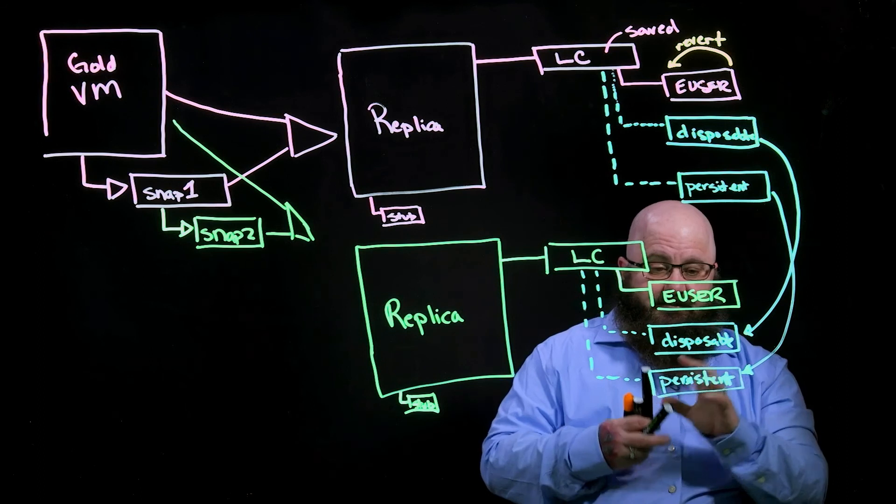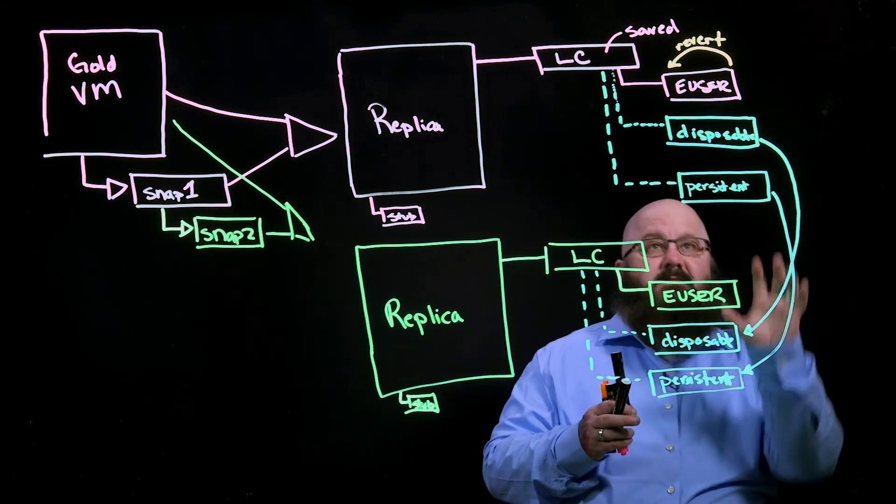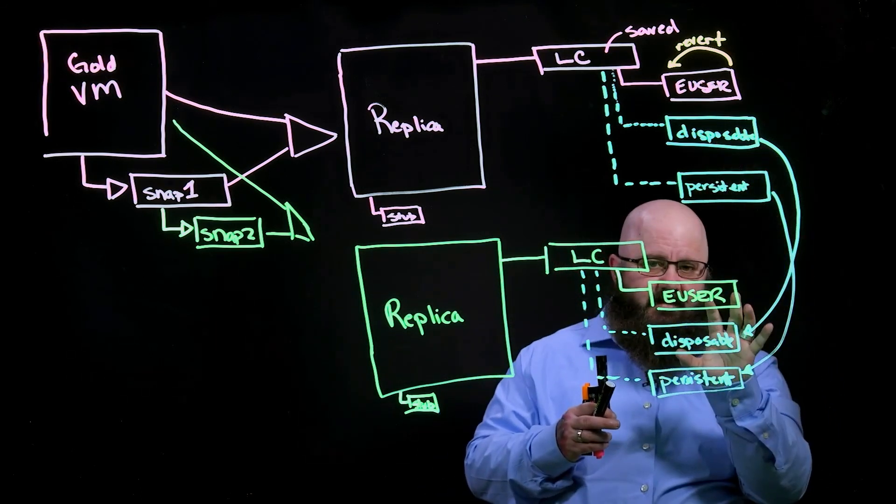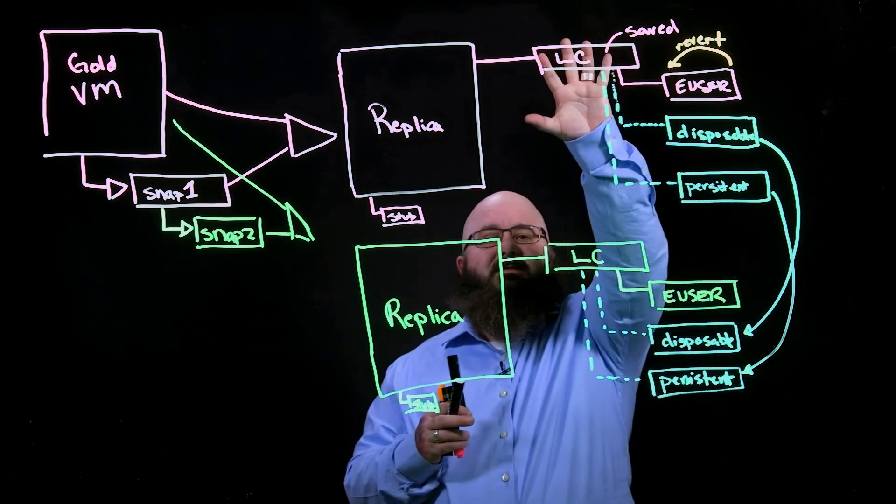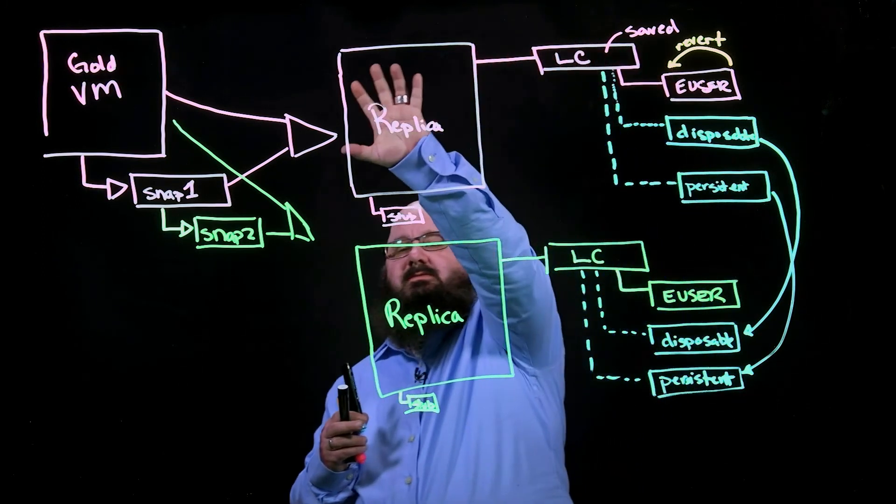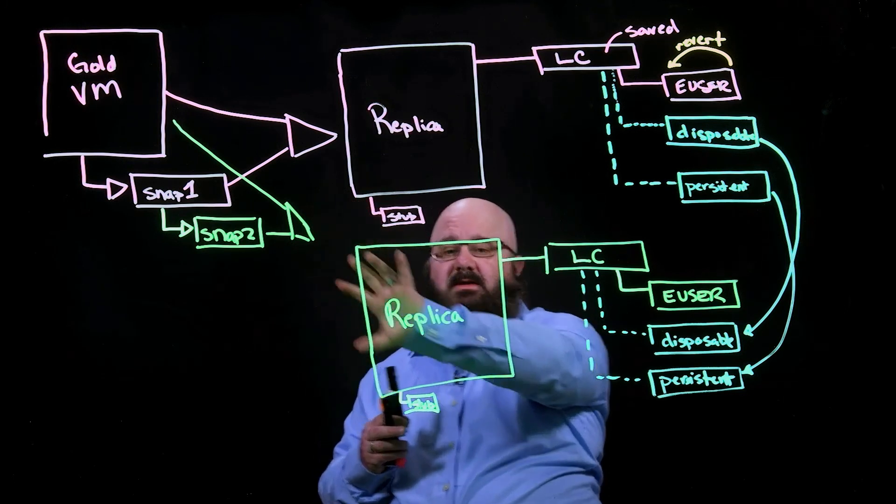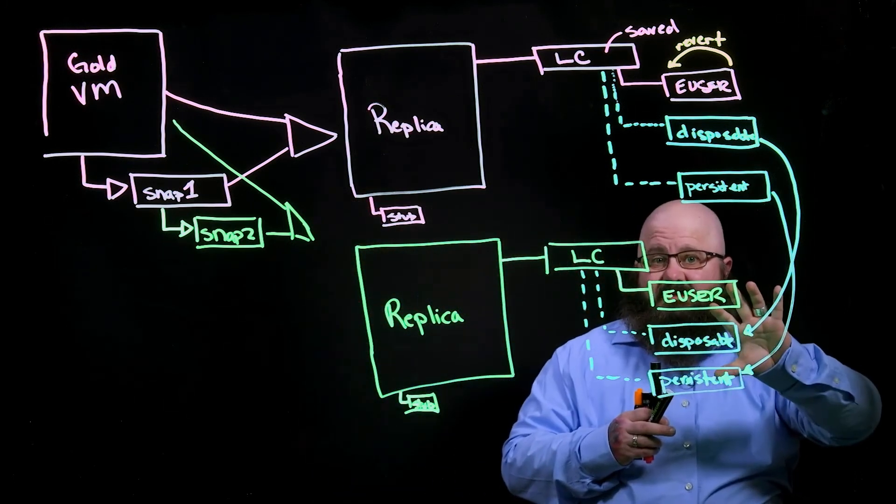It's a very straightforward process. Once these disks have been moved down and this link clone has been deleted, we'll then delete this replica to get rid of it—we don't need it anymore. And so our new environment resides here.